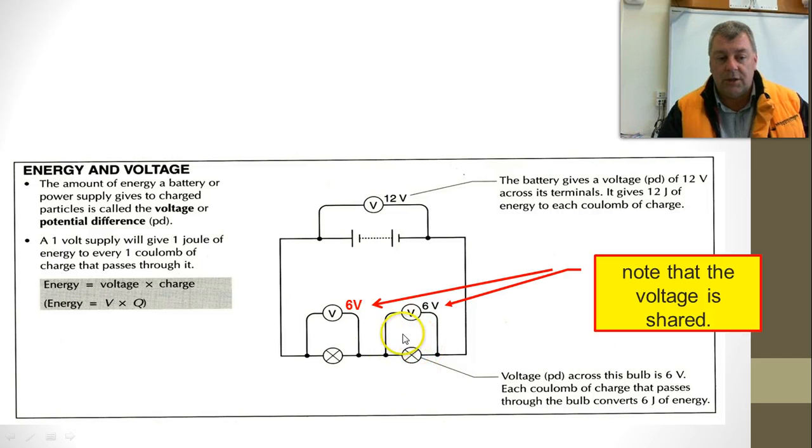Each coulomb of charge that passes through the bulb converts 6 joules of energy. So we get 6 joules of energy converted there, and 6 joules of energy here. That adds up to our 12 joules that we got originally.